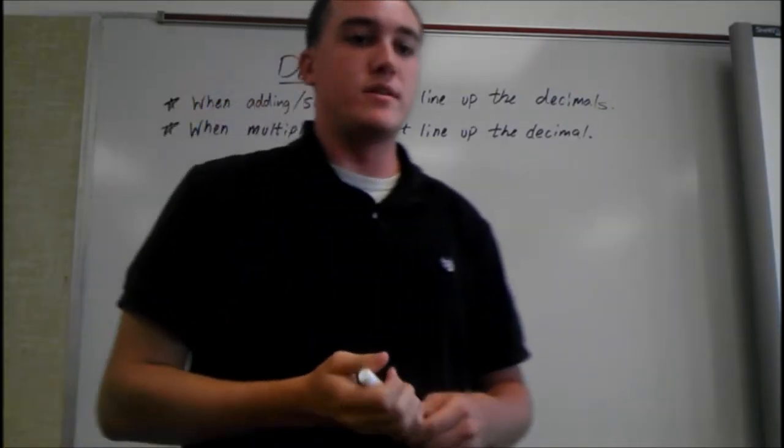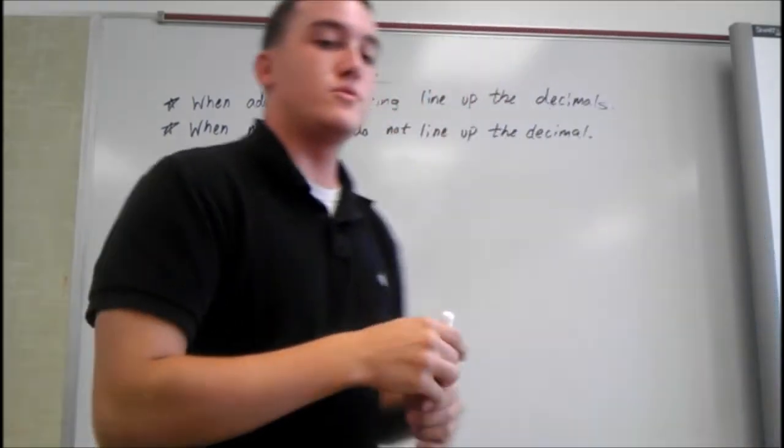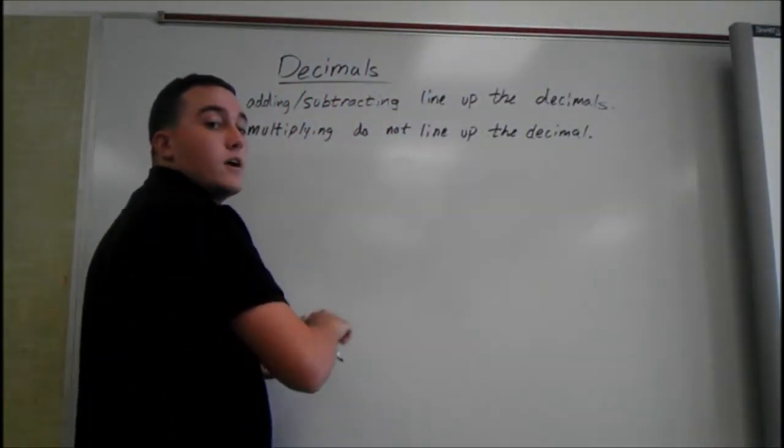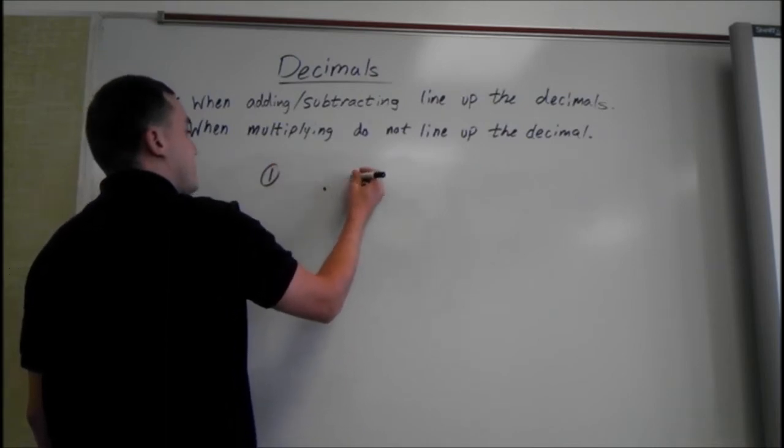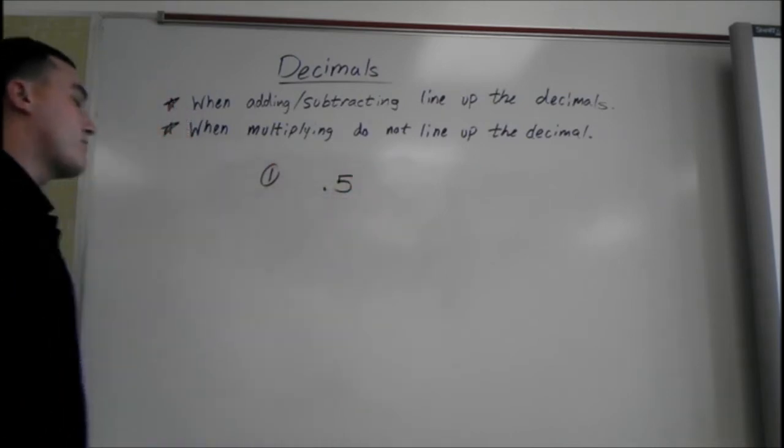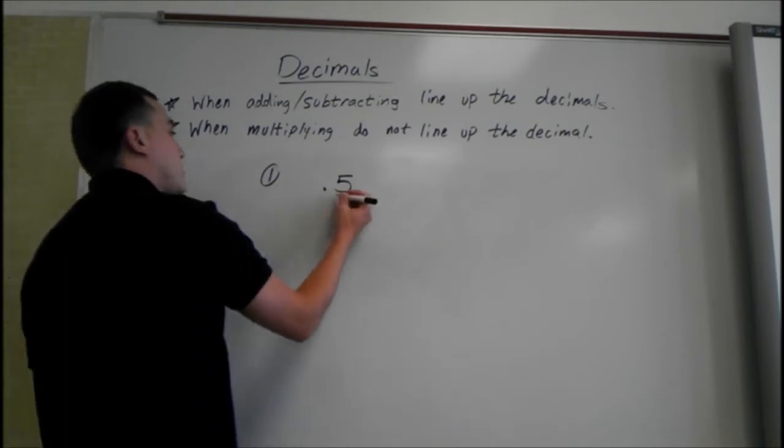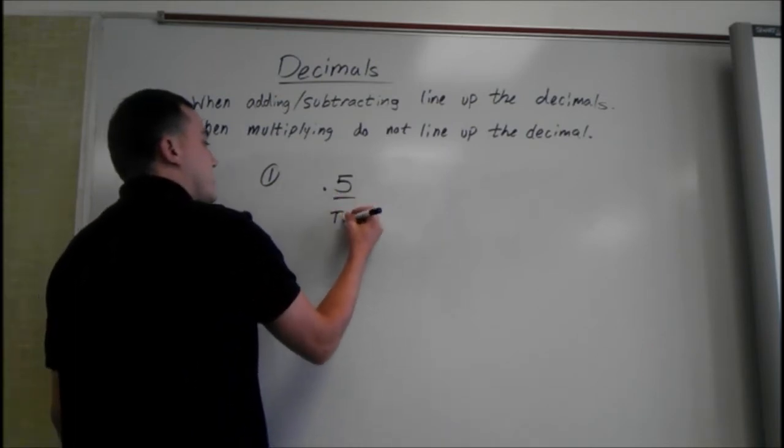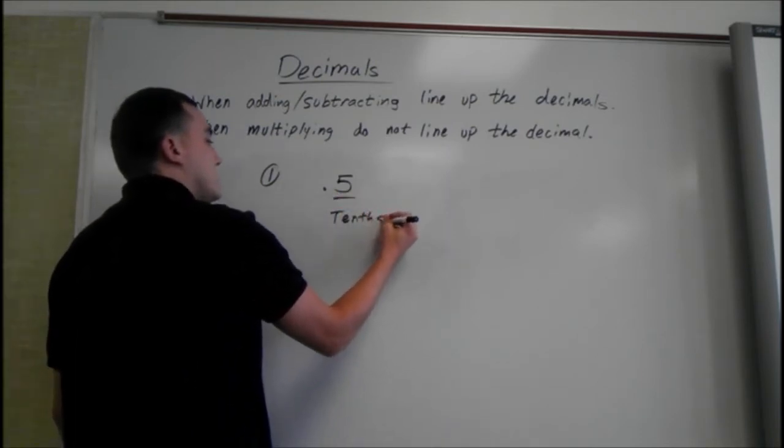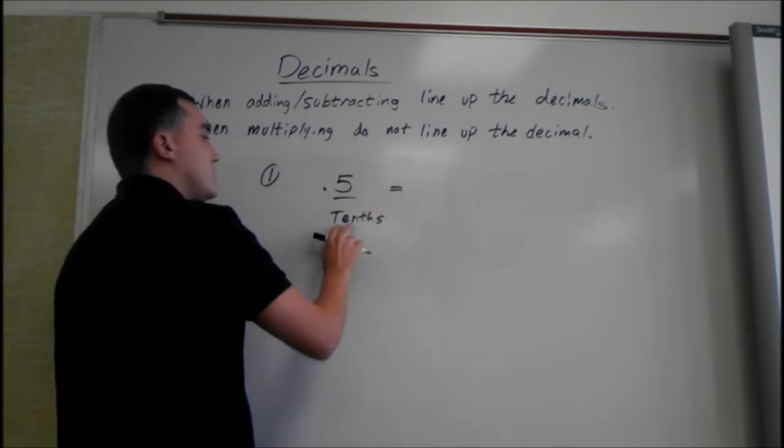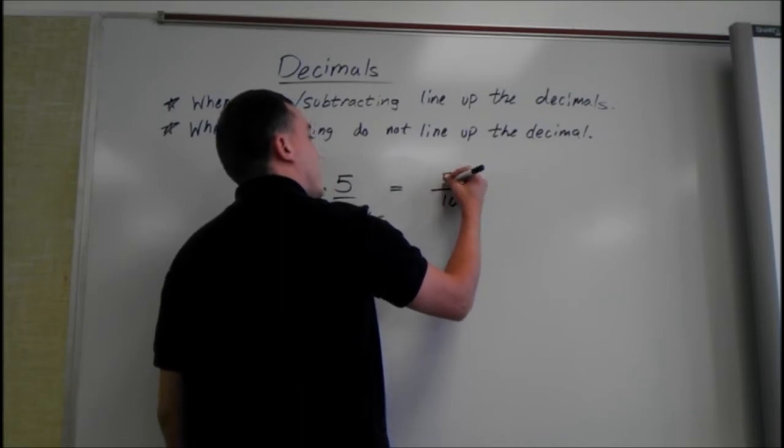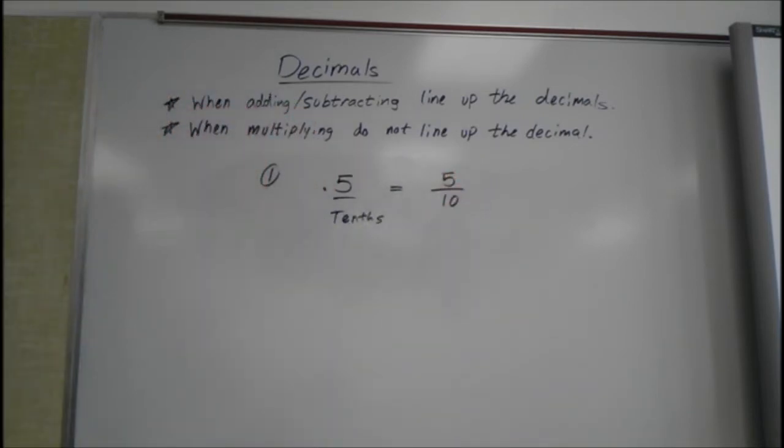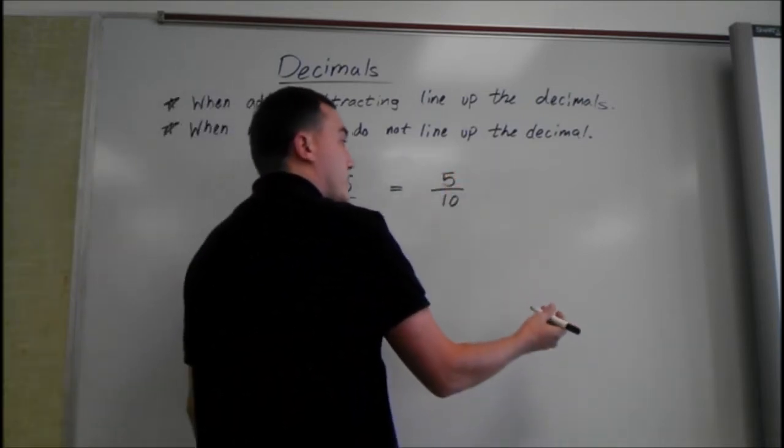All right, so the first thing we're going to do is convert a decimal to a fraction. We'll start out with something easy, 0.5. We know this is called the tenths place. So if this is a tenths place, we're going to put it over a ten, whatever that number is. And then we can reduce from there.